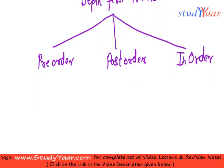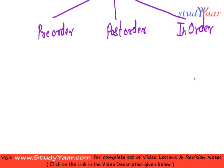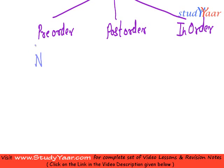In a preorder traversal, you first process your current node — let's call it N. You start by processing the current node, also called the root node.